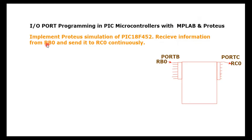Port B will serve as the input port and we are going to use just one pin of Port B, which is RB0, as the input pin. Similarly, RC0 belongs to Port C, so Port C will be used as the output port and only pin RC0 will be used as the output pin.